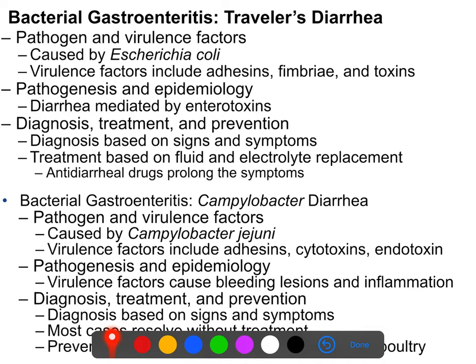You can also have bacterial gastroenteritis caused by Campylobacter, usually Campylobacter jejuni. This is more severe than most E. coli-caused cases of traveler's diarrhea. Virulence factors it has include adhesin, cytotoxins, and since it's gram-negative, endotoxin.